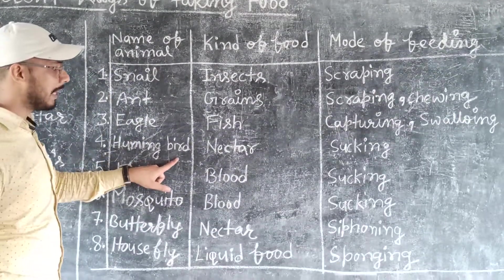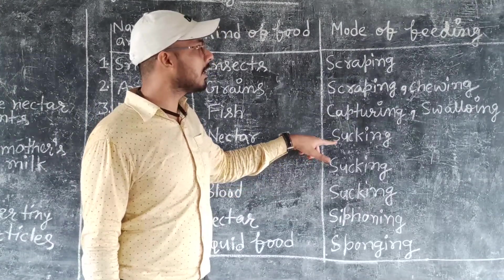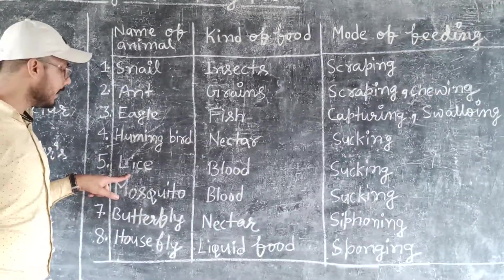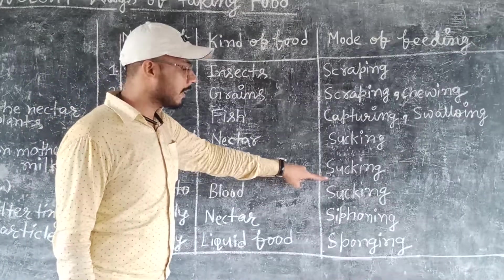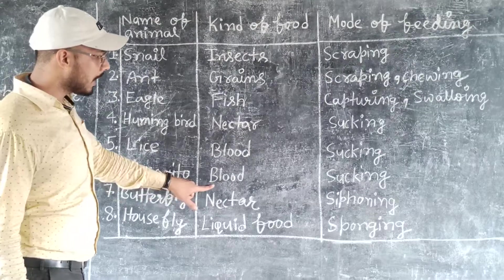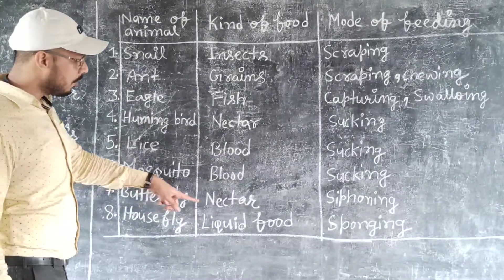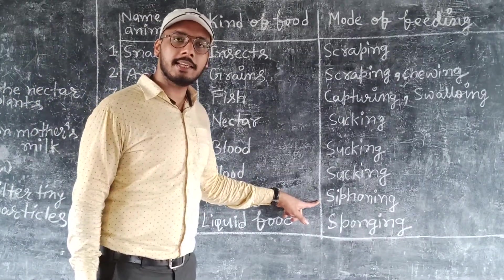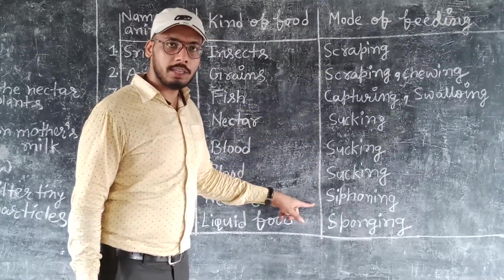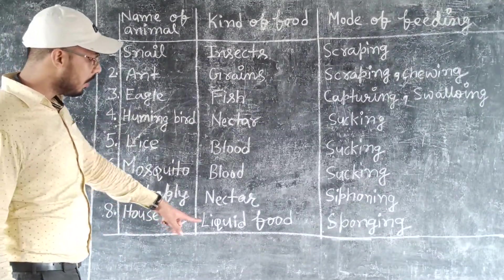When we talk about the mode of sucking, what is the mode of feeding? Lice feed by sucking blood. The mosquito also feeds by sucking blood. The housefly feeds by siphoning liquid food.